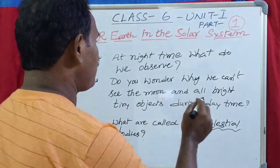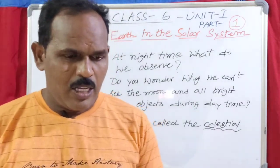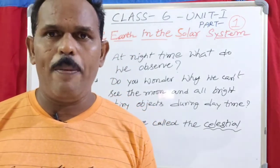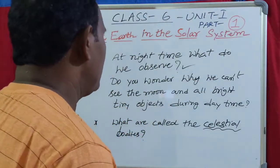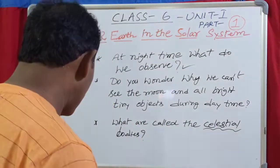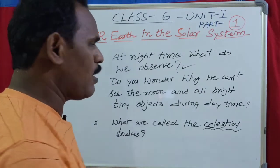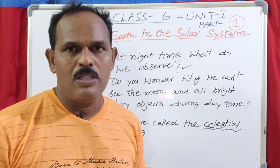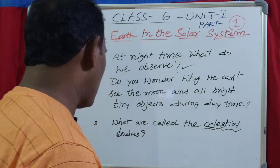We observe the sun in the sky. At night time, in summer months we prefer to sleep on the terrace or in open air. At night time, what do we observe in the sky? We observe stars. The whole sky is visible with many twinkling objects.